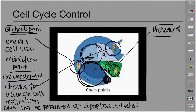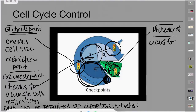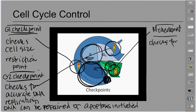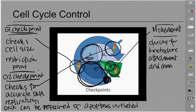The M checkpoint checks for kinetochore attachment — making sure the spindle is attached to the replicated chromosomes — and chromosome alignment. The chromosomes have to be aligned along the middle of the cell, called the metaphase plate.